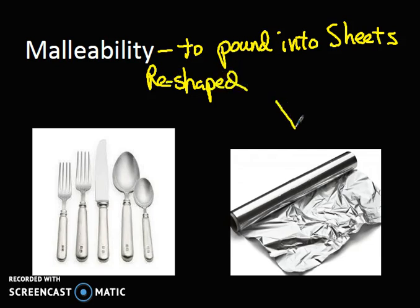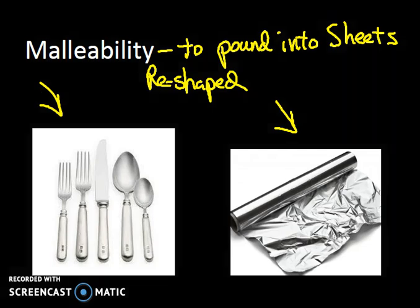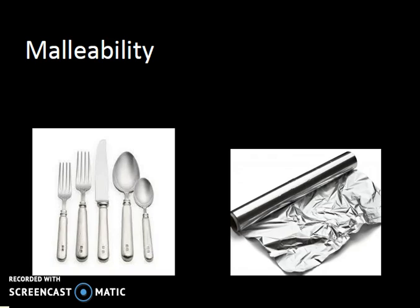And here we have an example of the metal being pounded flat into a foil. And then also, here's another example, where whatever that metal is, it's been shaped into forks and spoons and a knife. And yet, it is still going to be the same substance. And then there is one more.